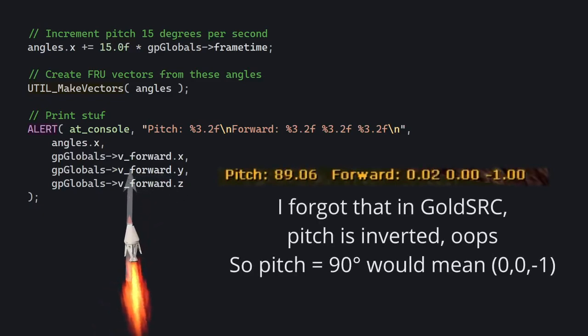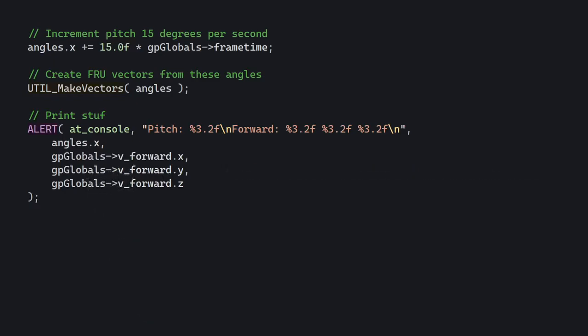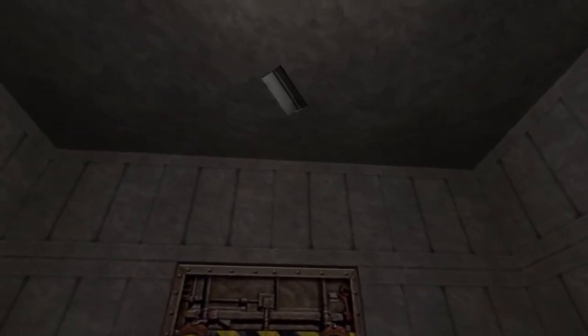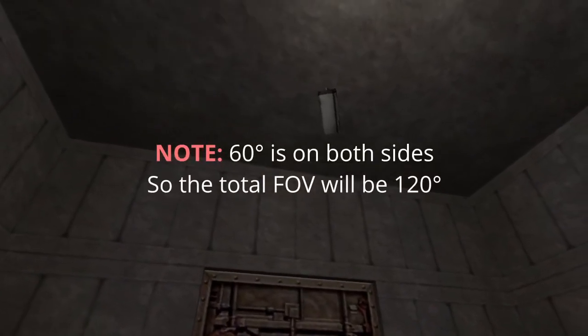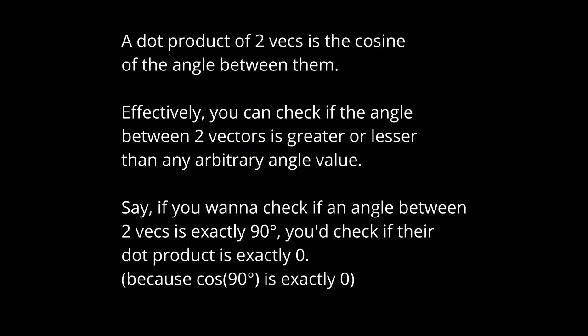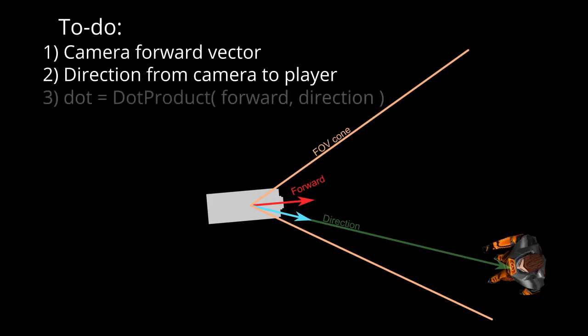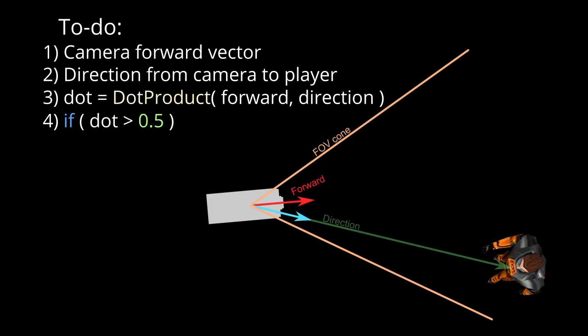Let's put all of these concepts to use and improve our camera entity from before. Let's say it has a field of view of about 60 degrees. How do we determine if some entity is within that FOV? Remember what I said about dot products and angles and the cosine? You've got to calculate three things: a forward vector for the camera based on its angles, a direction vector from the camera to the entity, and the dot product of these two vectors, then compare the dot product's value.